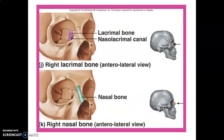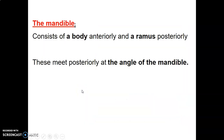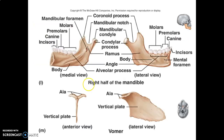The mandible has a body, ramus, and angle. The angle is where the body and ramus meet — the body is anterior and the ramus is posterior. Key features include the mandibular notch, the condylar process, the coronoid process, the mental foramen, and the angle of the mandible. You are expected to know all these parts.